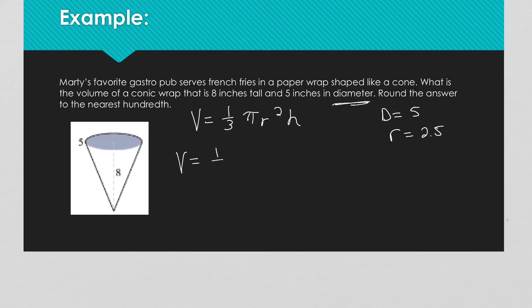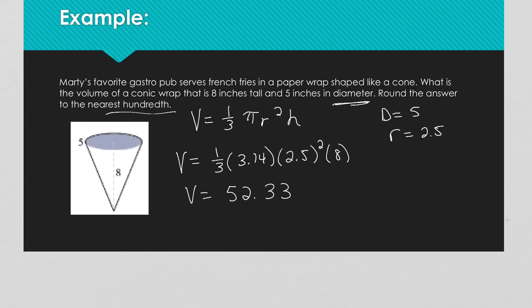Volume is equal to 1/3 times 3.14 times 2.5 squared times 8. Typing it in: 1/3 times 3.14 times 2.5 squared times 8, rounded to the nearest hundredth. We're dealing with inches cubed because it's volume. That's it for this lesson — if you have any questions, don't forget to ask or comment below. Thank you so much.